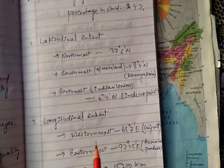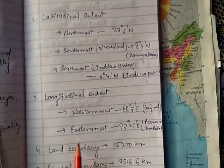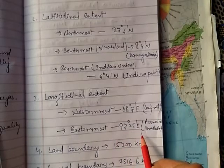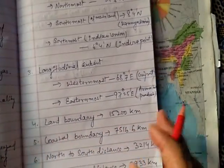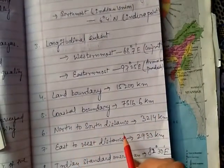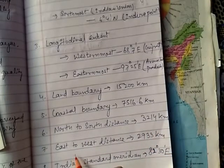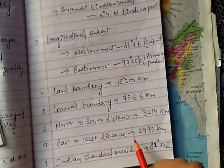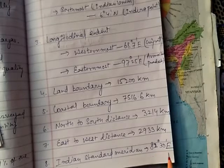Longitudinal extent — westernmost point: 68 degrees 7 minutes east at Gujarat; easternmost point: 97 degrees 25 minutes east in Arunachal Pradesh. The land boundary of India is about 15,200 km. The coastal boundary is 7,516.6 km. North-to-south distance: 3,214 km; east-to-west distance: 2,933 km. The Indian Standard Meridian is the 82 degrees 30 minutes east longitudinal line.